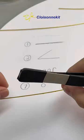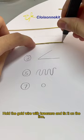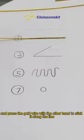Hold the gold wire with tweezers and fix it on the line. And press the gold wire with the other hand to stick it along the line. Make the gold wire stand up, not lying flat.